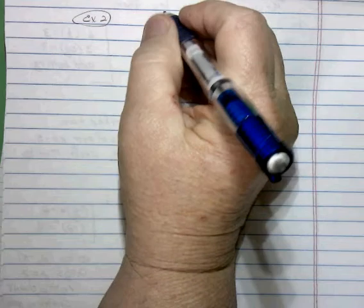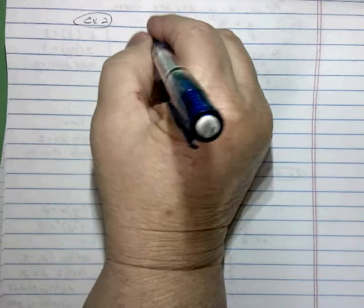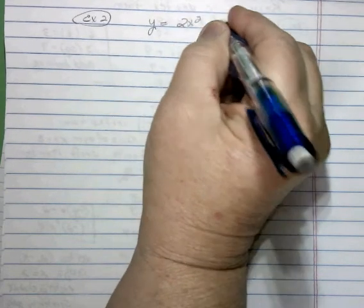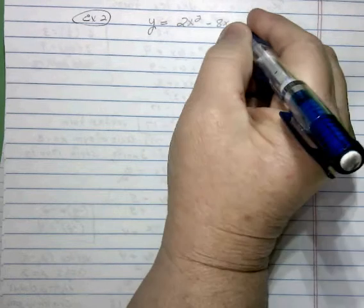Example 2 of using the completing the square technique, we have the example y equals 2x squared minus 8x minus 10.